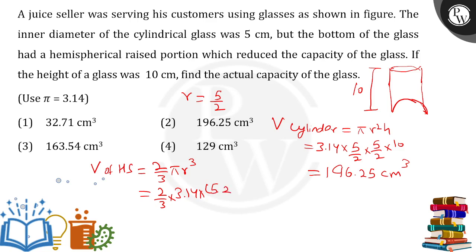So I will write (5 by 2) whole cube. Taking the whole cube and doing the calculation will get a long answer, and this will come out to be 32.7 cm³.